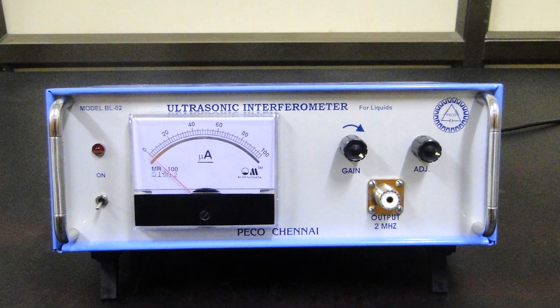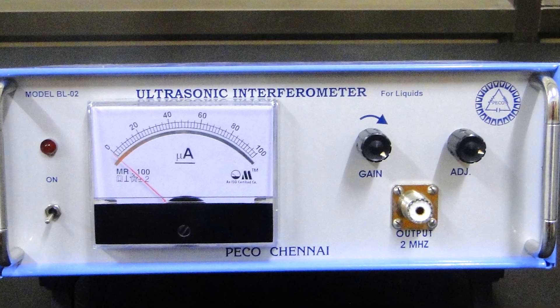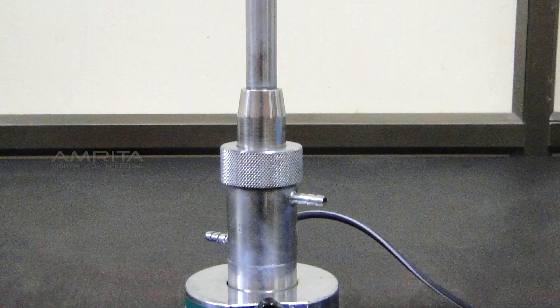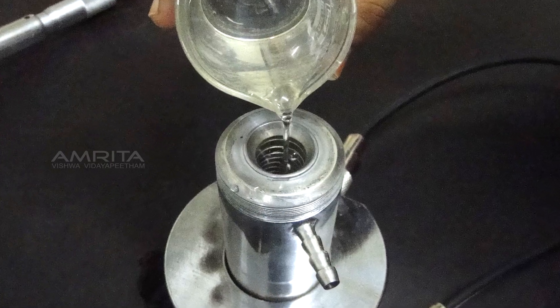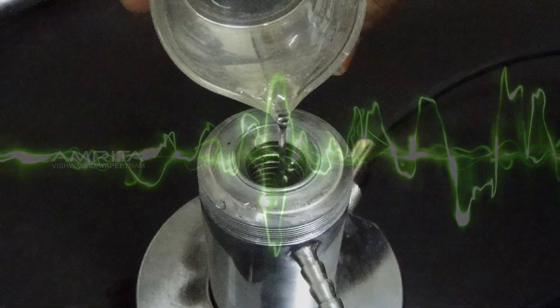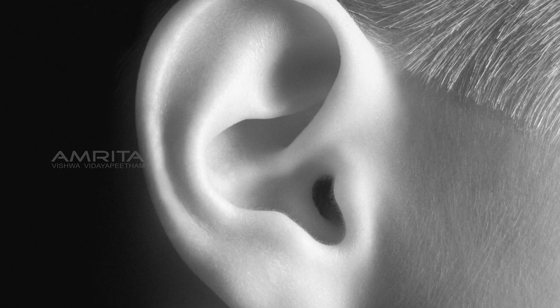Theory: The ultrasonic interferometer is a simple device that yields accurate and consistent data from which one can determine the velocity of ultrasonic sound in a liquid medium. Ultrasonic sound refers to sound pressure with a frequency greater than the human audible range, that is 20 hertz to 20 kilohertz.